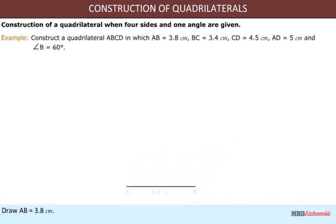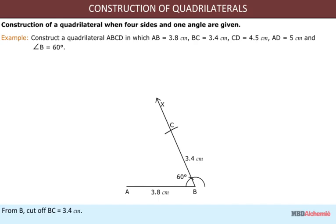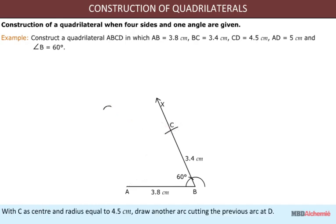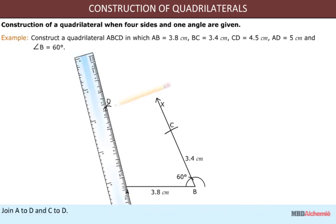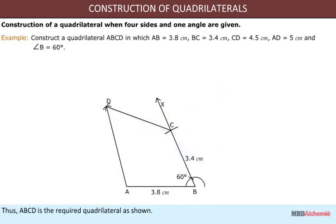Draw AB = 3.8 cm. Make angle ABX = 60 degrees. From B, cut off BC = 3.4 cm. With A as center and radius 5 cm, draw an arc. With C as center and radius 4.5 cm, draw another arc cutting the previous arc at D. Join AD and CD. Thus ABCD is the required quadrilateral as shown.